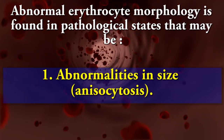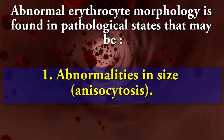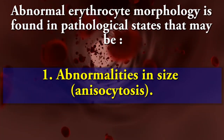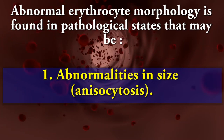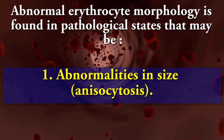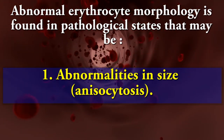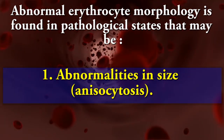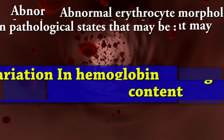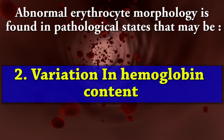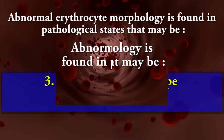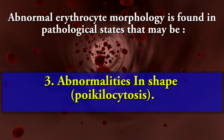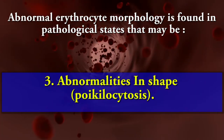Abnormal erythrocyte morphology is found in pathological states that may include abnormalities in size, variation in hemoglobin content, and abnormalities in shape.